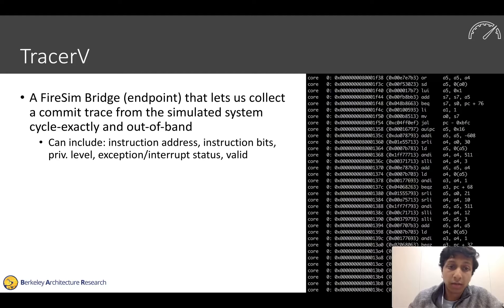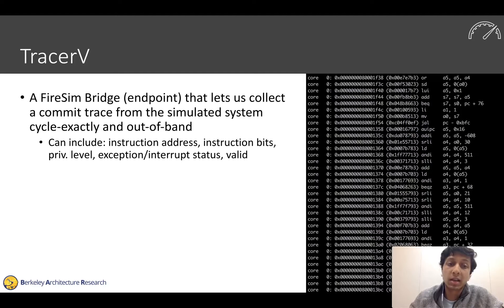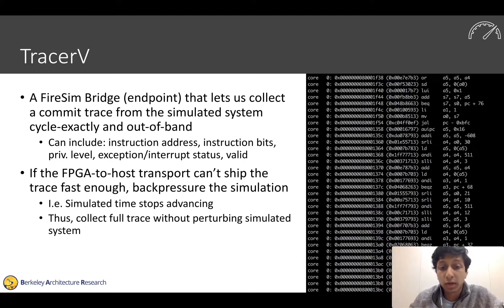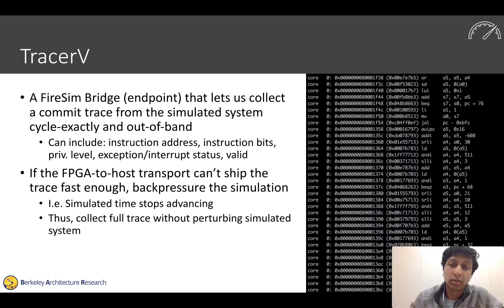Tracer5 is a FireSim bridge that allows us to collect a commit trace from our simulated systems, cycle-exactly and out-of-band. This can include information like the instruction address, instruction bits, and other components. The nice thing is that if the FPGA-to-host transport is backed up and can't copy off the trace quickly enough, it will back-pressure the simulation and stop simulated time from advancing, ensuring we can collect the full trace without perturbing the simulated system.